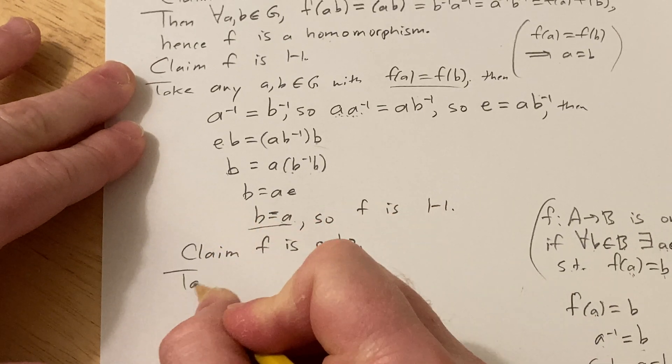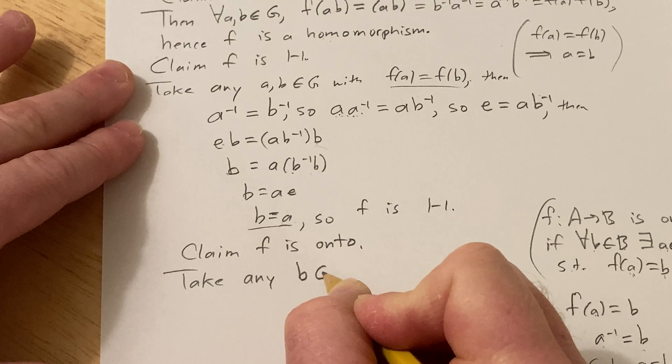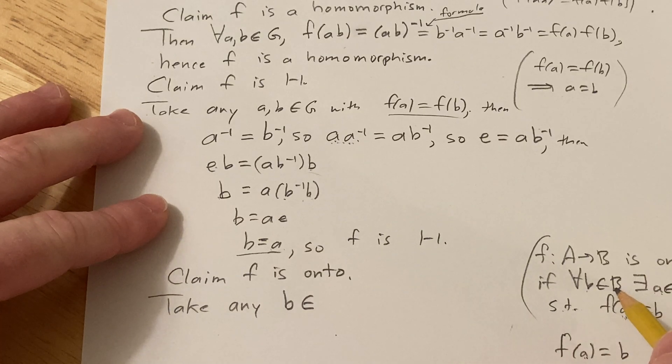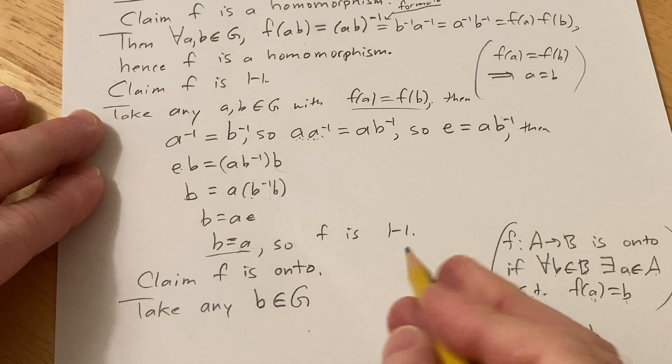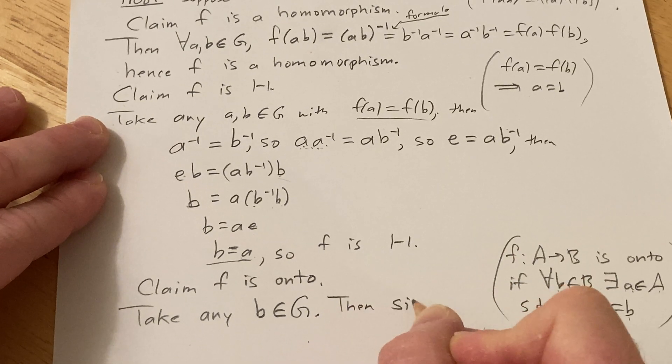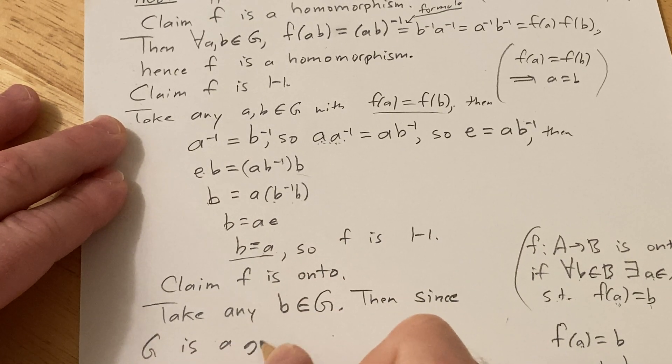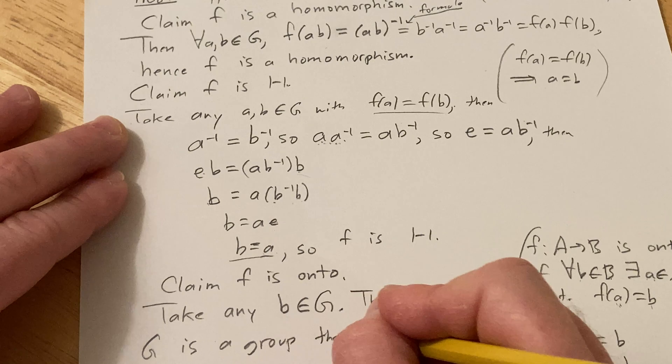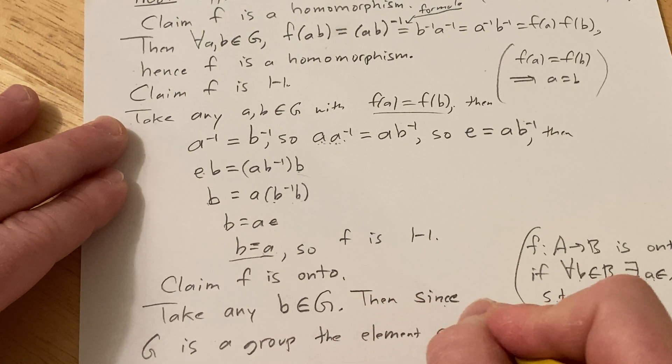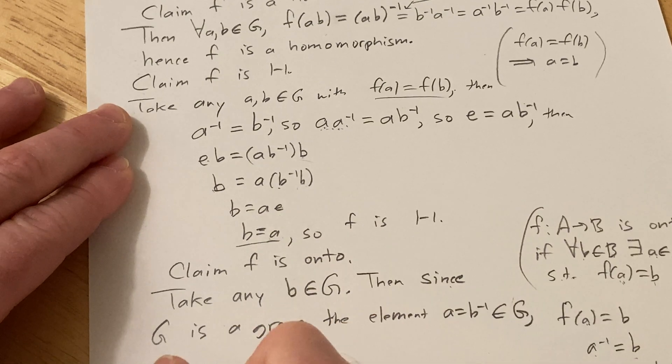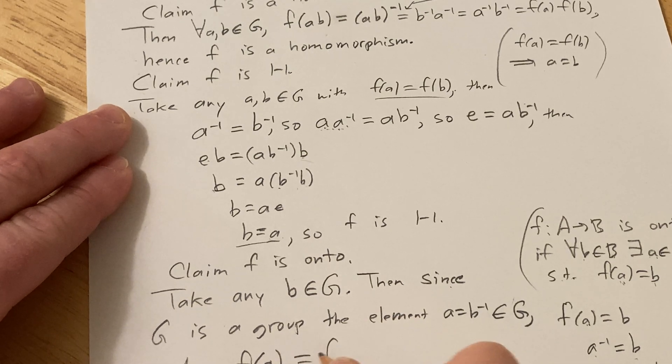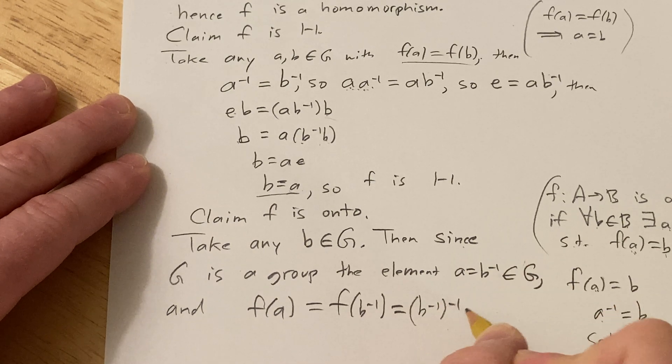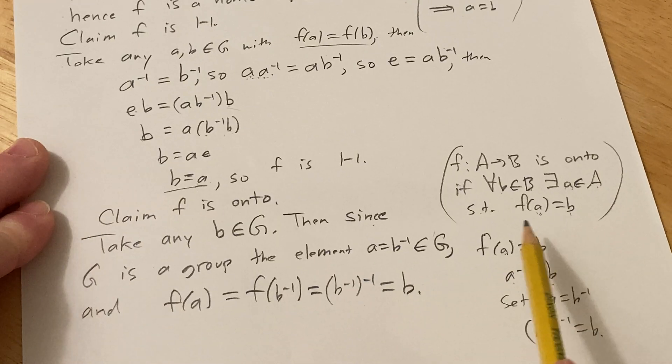So I'll say take any b in, and what's the co-domain of our function? Our function is a map from G to G so it's G both cases. So take our big B is G, okay that's our big B. Then since G is a group, the element I'll call it a, a equals b inverse, is in G and f(a) equals f(b inverse) which is equal to b inverse inverse which is equal to b.